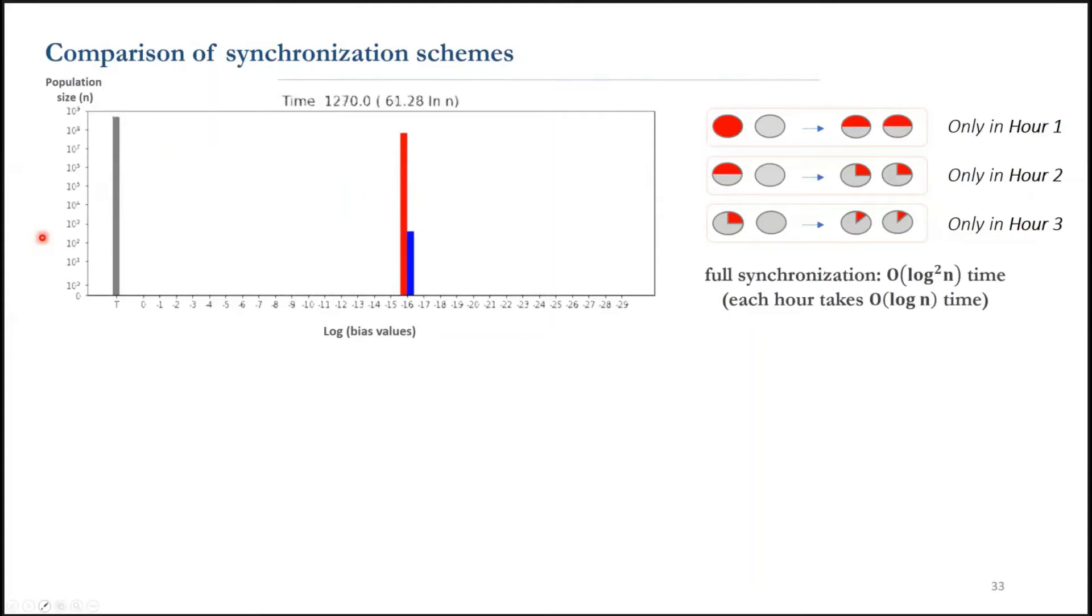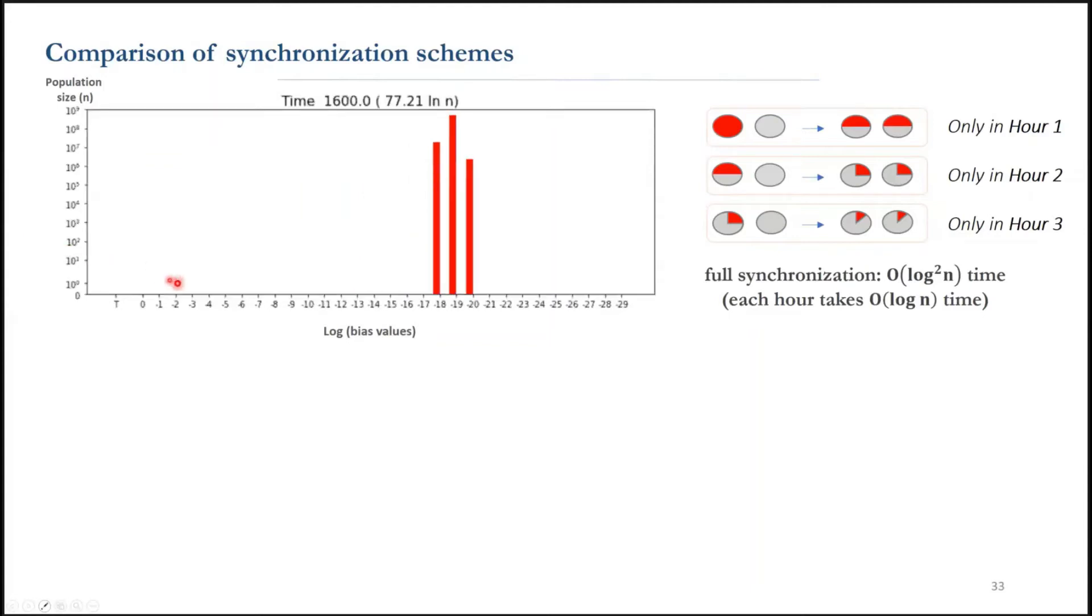We can see that only two consecutive hours appear simultaneously. And in the end, we have nothing but reds. This takes log n hours of cancel and split, each having log n time, which is equal to a total of log n squared time.